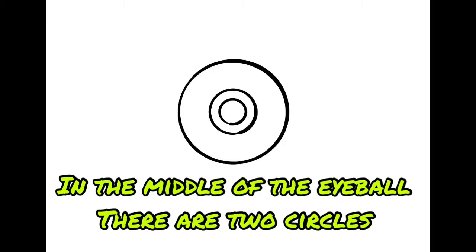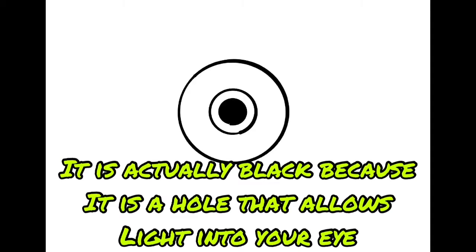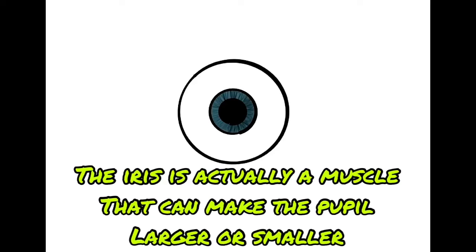In the middle of the eyeball, there are two circles. The smaller black one is called the pupil. It's actually black because it's a hole that allows light into your eye. The colored part around the pupil is called the iris. The iris is actually a muscle that will make the pupil larger or smaller.